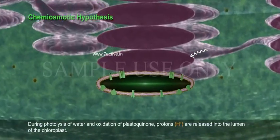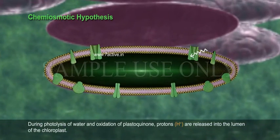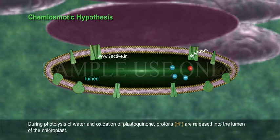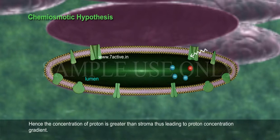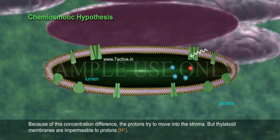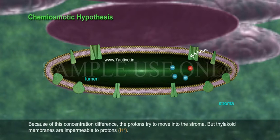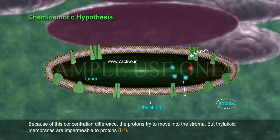During photolysis of water and oxidation of plastoquinone, protons (H+) are released into the lumen of the chloroplast. Hence, the concentration of protons in the lumen is greater than in the stroma, leading to a proton concentration gradient. Because of this concentration difference, the protons try to move into the stroma, but thylakoid membranes are impermeable to protons (H+).